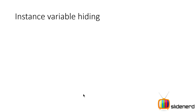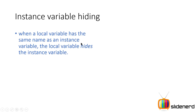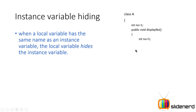Why do we need 'this'? Why not just write 'number' directly? Here's a practical use case: when a local variable has the same name as an instance variable, the local variable hides the instance variable. In class A, there's an instance variable 'int number = 1', and inside 'displayNumber' there's a local variable 'int number = 5'. When we print 'number', is it going to print one or five?